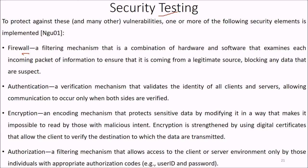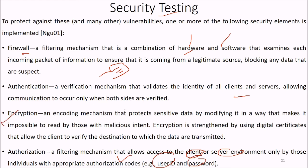To protect against these vulnerabilities, various security elements can be implemented. A firewall is a filtering mechanism — a combination of hardware and software — that examines each incoming packet to ensure it comes from a legitimate source, blocking suspicious data. Authentication is a verification mechanism that validates the identity of clients and servers, allowing communication only when both sides are verified. Authorization is a filtering mechanism that allows access only to those individuals with appropriate authorization codes like user ID and password. Encryption is an encoding mechanism that protects sensitive data by modifying it in a way that makes it impossible to read by those with malicious intent. Encryption is further strengthened by using digital certificates that allow the client to verify the destination to which data is transmitted.